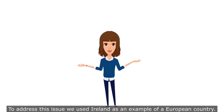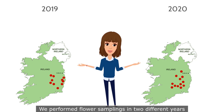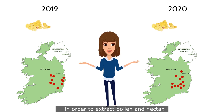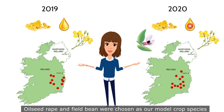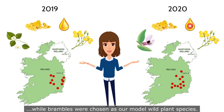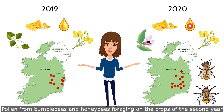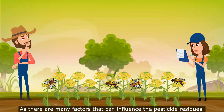To address this issue, we use Ireland as an example of a European country. We performed flower samplings in two different years in order to extract pollen and nectar. Oilseed rape and field bean were chosen as our model crop species, while brambles were chosen as our model wild plant species. Pollen from bumble bees and honey bees foraging on the crops of the second year was also collected.